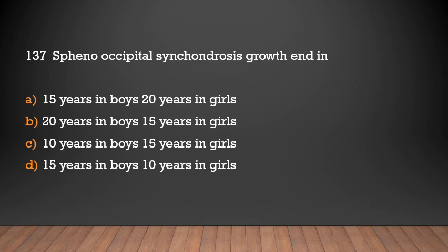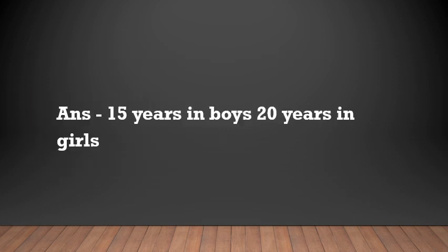The spheno-occipital synchondrosis growth ends at: 15 years in boys / 20 years in girls, 20 years in boys / 15 years in girls, 10 years in boys / 15 years in girls, or 15 years in boys / 10 years in girls? The answer is 15 years in boys and 20 years in girls.